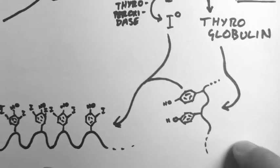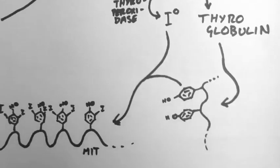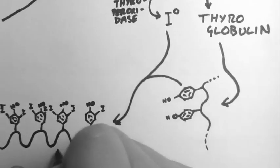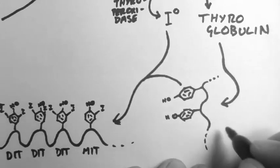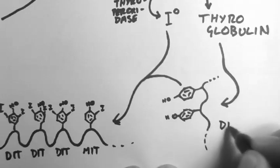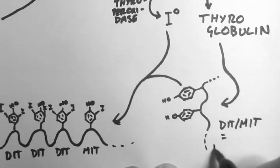If there's just one, then we call it MIT. And if there's two, we call it DIT. So here's one example of MIT and three examples of DIT. DIT and MIT stand for di or mono iodotyrosine.